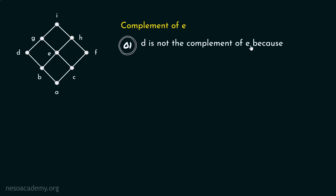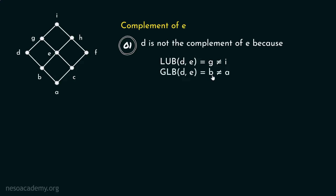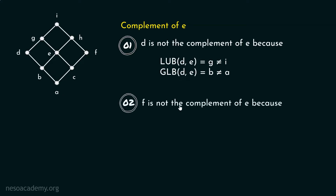D is not the complement of E because the least upper bound of D and E is equal to G, and the greatest lower bound of D and E is equal to B, which is not equal to A. It is clear that D is not the complement of E.